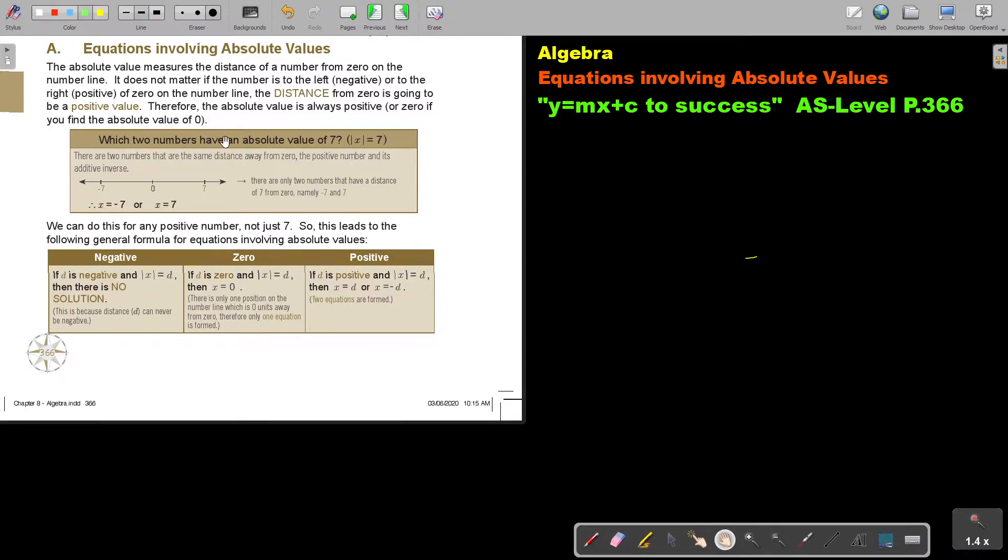Which two numbers have an absolute value of seven? There are two numbers that are the same distance away from zero: the positive number and its additive inverse, the negative one. So there are only two numbers that have a distance of seven from zero, namely negative seven and seven.